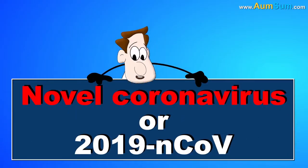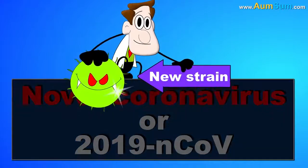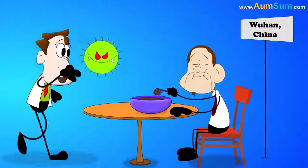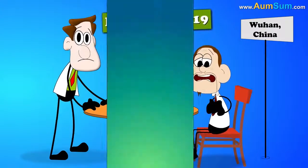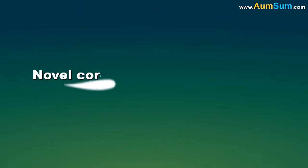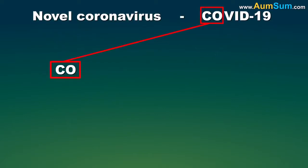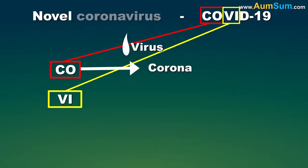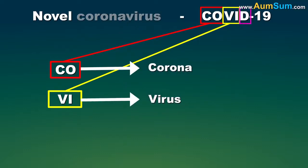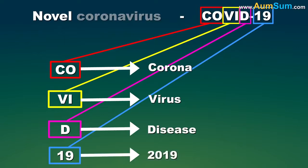Novel Coronavirus, or 2019-nCoV, is a new strain of Coronavirus which was first detected in Wuhan, China in December 2019. The disease caused by Novel Coronavirus is named COVID-19. Here, CO and VI are taken from the word Coronavirus, while D stands for Disease and 19 stands for the year 2019.